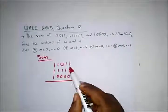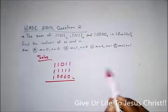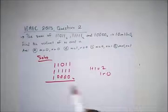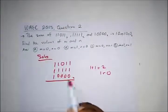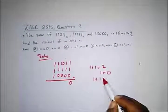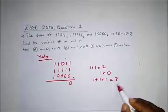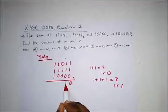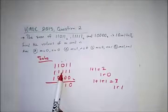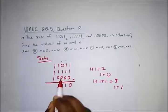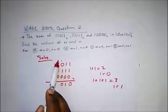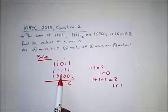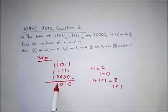Let's add them up in base 2. 1 plus 1 is 2, and 2 in base 2 is 1 remainder 0, so we write 0 and carry 1. We have 1 plus 1 plus 1 which is 3, and 3 in base 2 is 1 remainder 1, so we write 1 and carry 1. Then 1 plus 1 is 2, giving 1 remainder 0, carry 1. Then 1 plus 1 plus 1 is 3 again, giving 1 remainder 1.